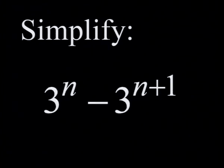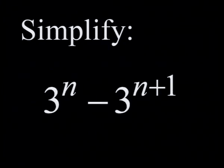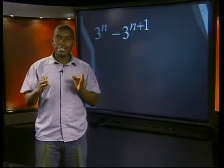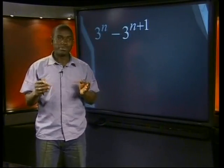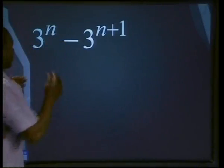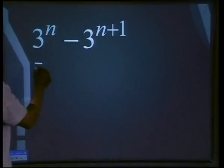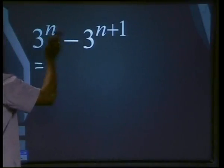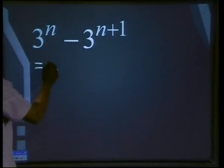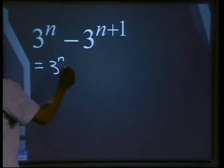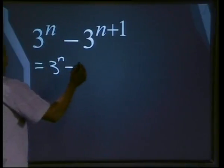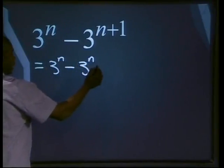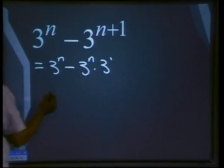3 to the power of n minus 3 to the power of n plus 1. What we've used so far doesn't help us too much, does it? But look, we have two terms here. We could try and find a common factor between the two of them. We'll have 3 to the power of n, and this one can be written as 3 to the power of n times 3 to the power of 1. We have a common factor of 3 to the power of n.